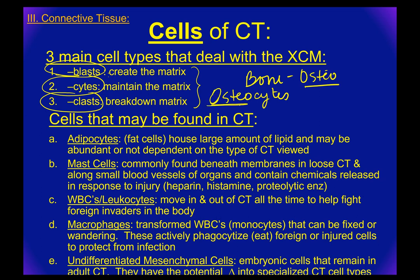Osteo means bone, cytes means cell, so osteocytes are bone cells. When you have a mature, healthy bone, these cells sit in the matrix and basically maintain it — they make sure everything's okay. If everything's fine, they just kind of sit there, but if something happens and they need to add to it, they will.